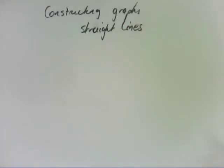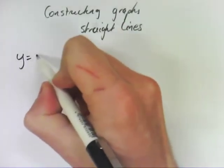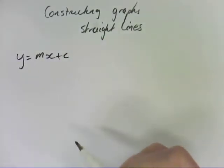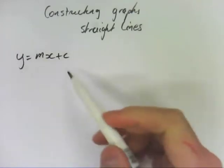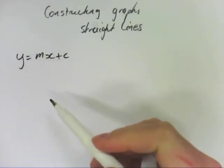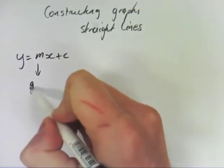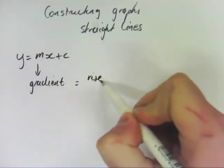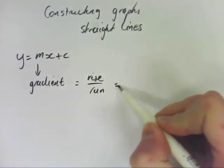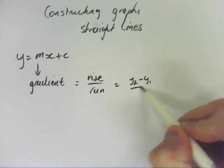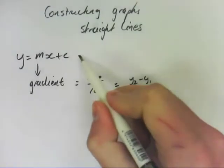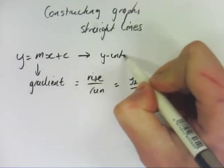When constructing straight line graphs, there are just a few simple things you need to remember. The first one is to draw a graph, you're better off getting it into y equals mx plus c, it's much easier. M is the gradient, which can be rise over run or y2 minus y1 over x2 minus x1, depending on how you've been taught. And c is the y-intercept.